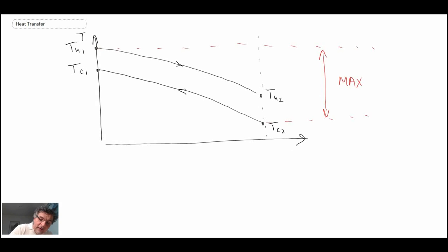And so that is the maximum possible temperature difference that exists. And so with that, what we can write is Q max equals M dot C sub P for our minimum fluid, that would be the fluid where M dot C sub P is the smallest, multiplied by the difference of hot in minus cold in. That would be the maximum temperature swing that we could get.